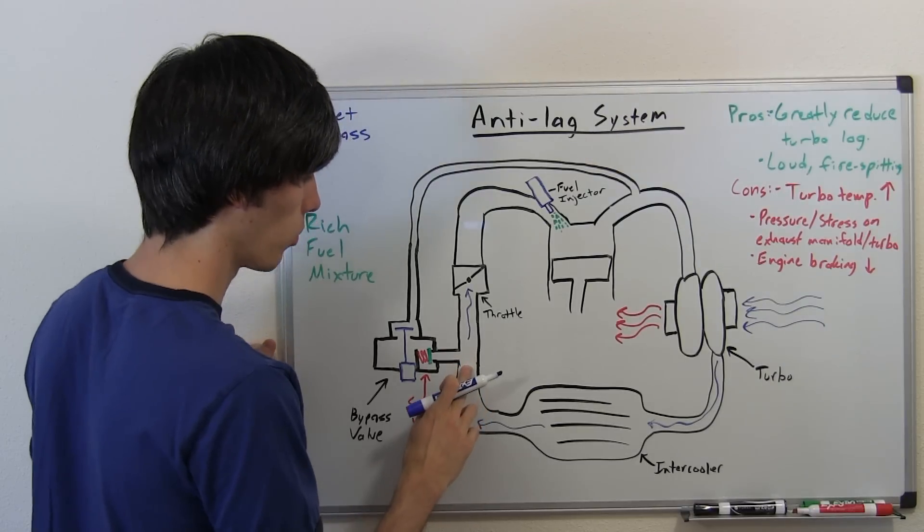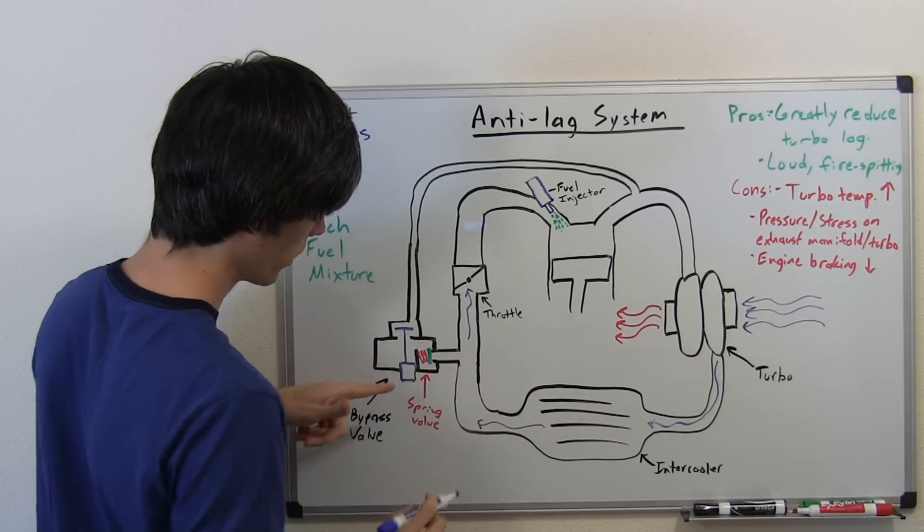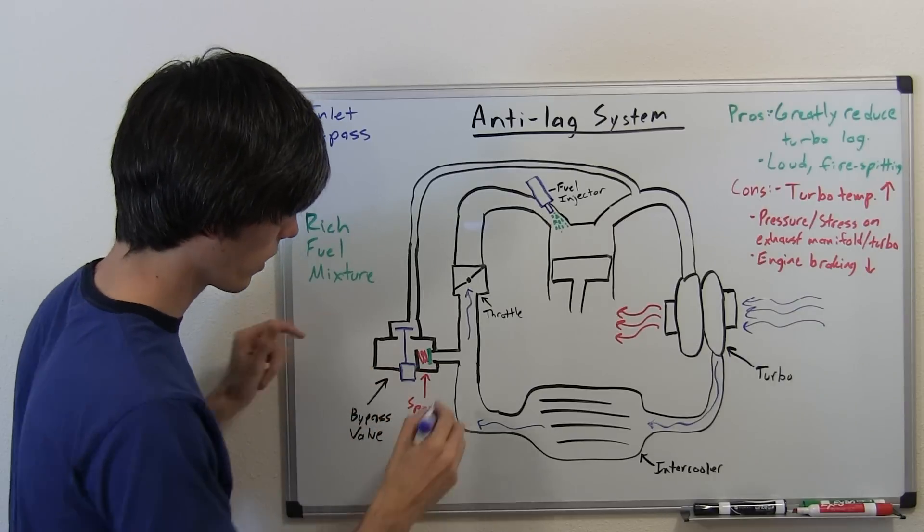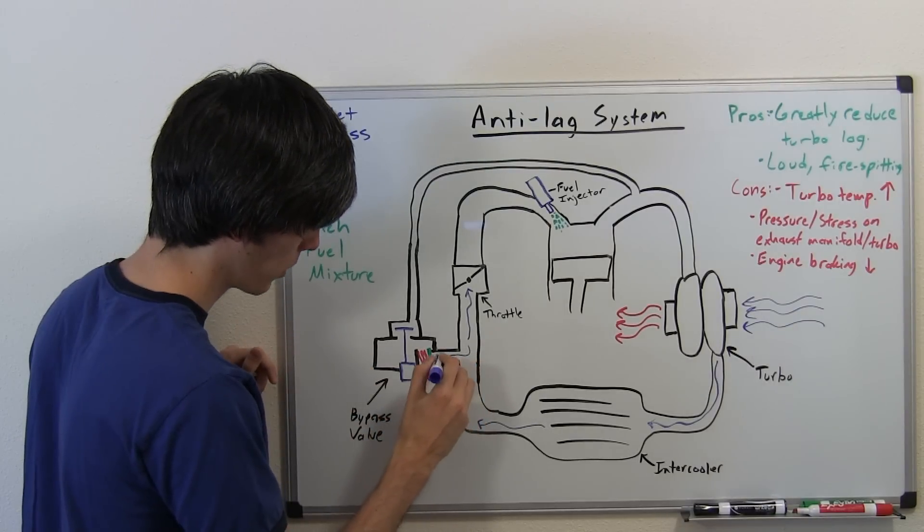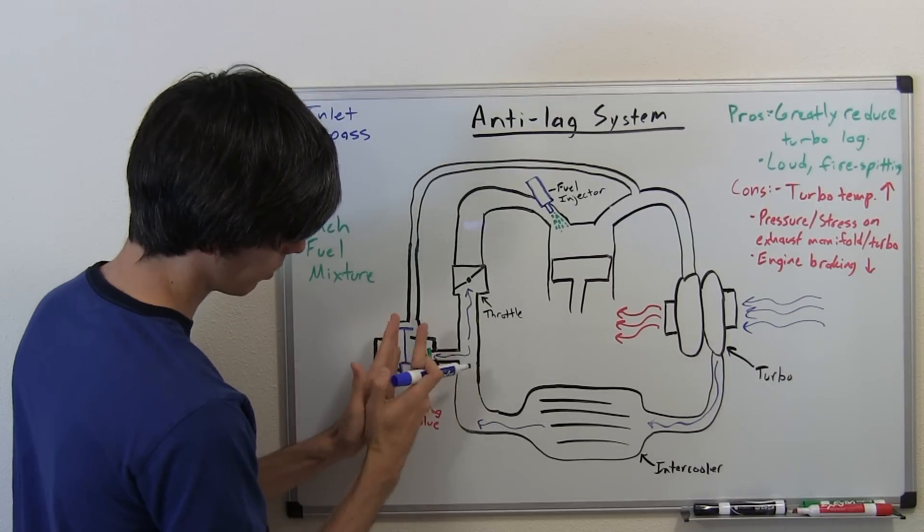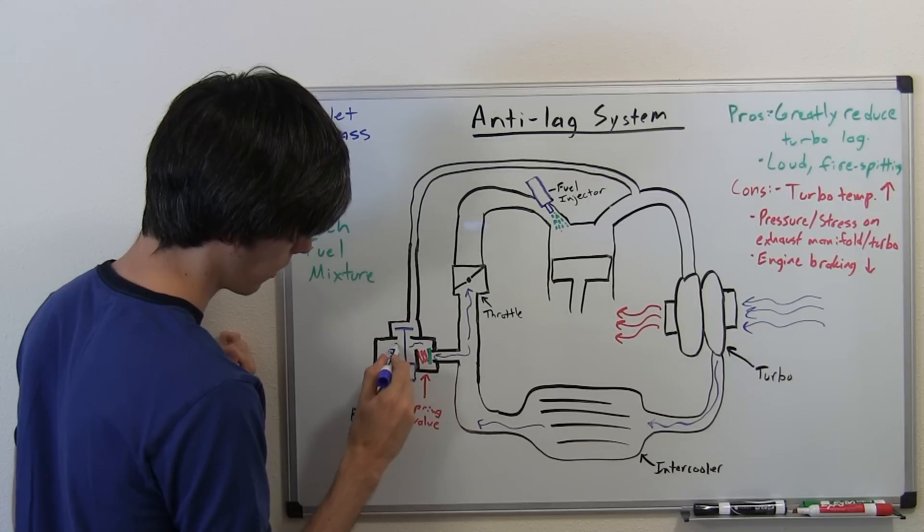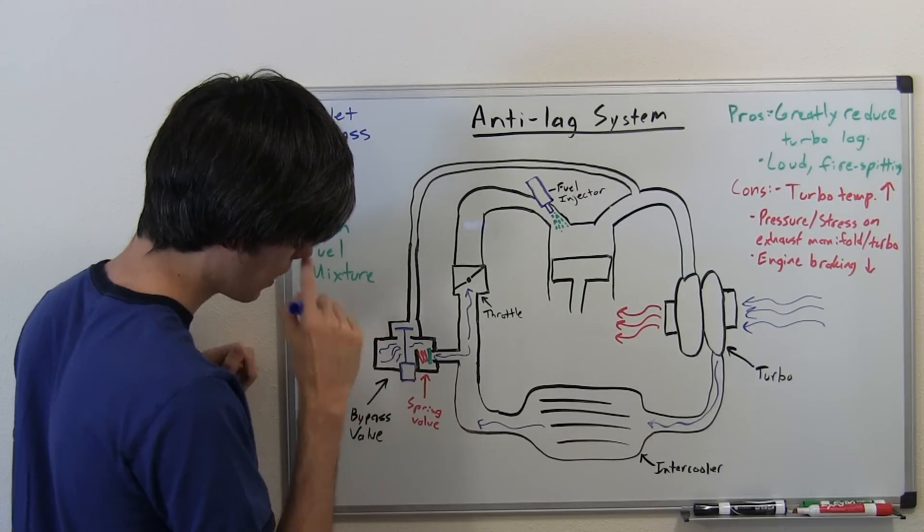All that pressure needs to go somewhere. Where it goes is: you've got this spring valve right here, so the pressure pushes up against that, compresses that spring, and allows air to flow in here.